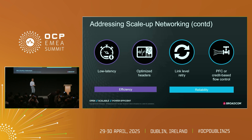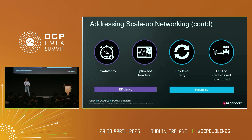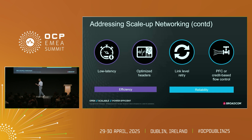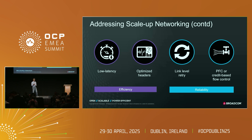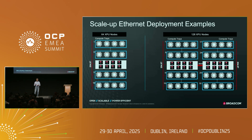Beyond bandwidth, Ethernet must also address low latency, because you're moving memory from one XPU to another and don't want high latency in that transfer. Networking overhead must be very small relative to the data being transferred — that's why optimized headers come into play. It also has to be a very reliable transport: if there are packet drops between XPUs, you need to reliably retransmit that data very quickly. Congestion between machines must also be dealt with. High bandwidth, reliable transport, and very efficient transfers are the things that need to be and will be addressed in these products.